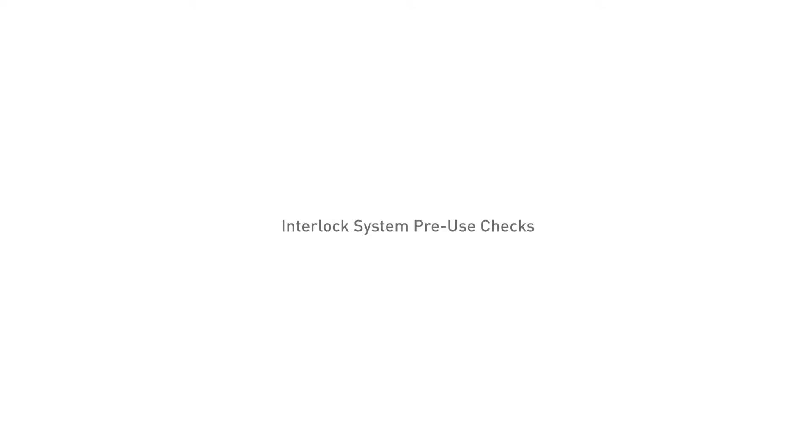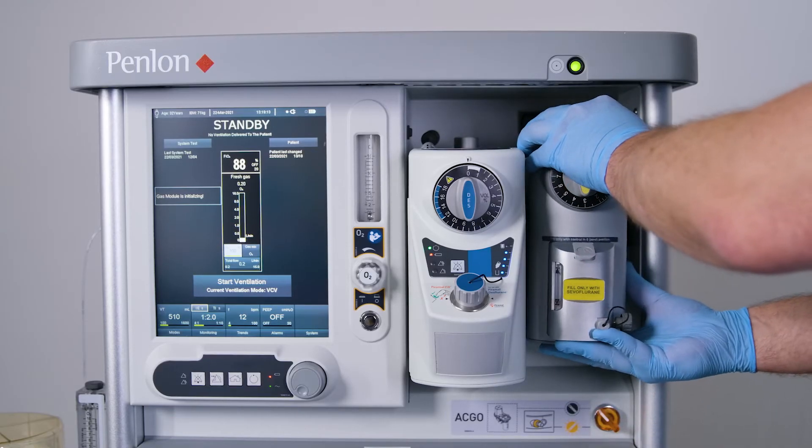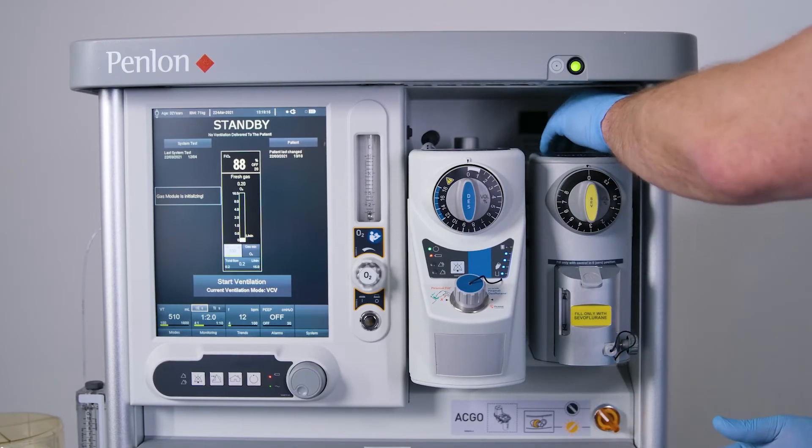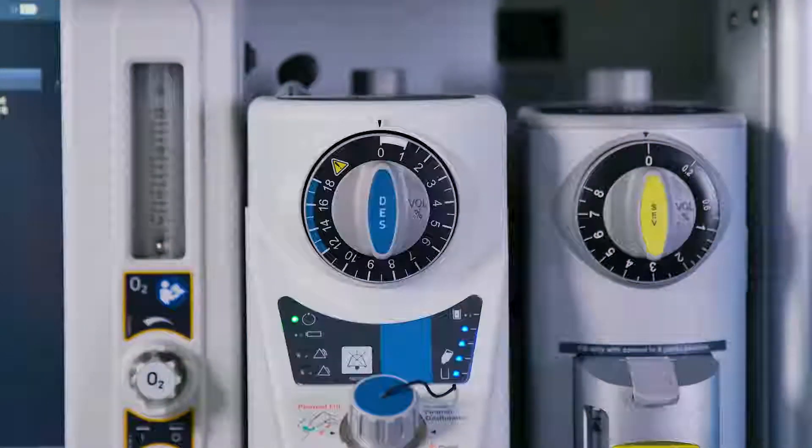Interlock system pre-use checks. Mount another vaporizer on the machine back bar adjacent to the Sigma EVA. Allow the Sigma EVA vaporizer to finish warming up and enter standby mode. This is indicated by the power indicator being continuously illuminated.